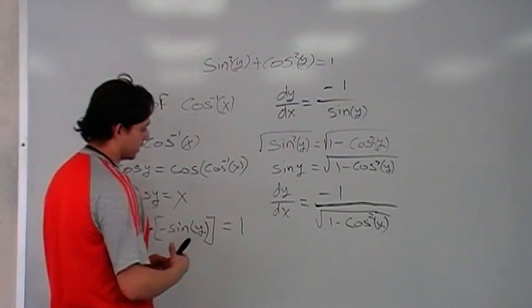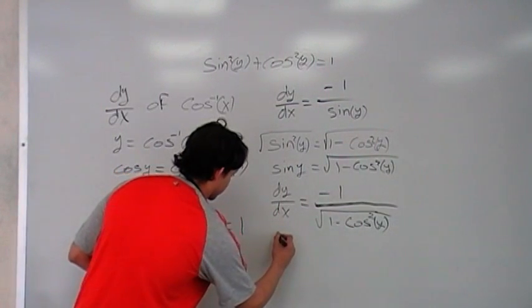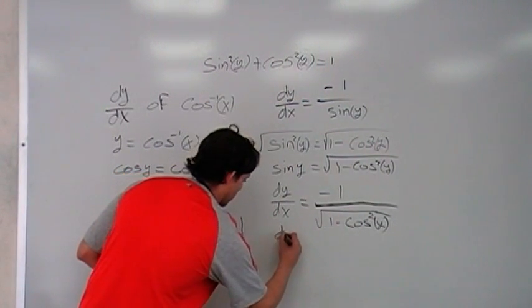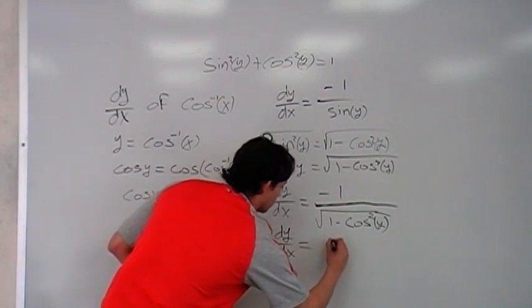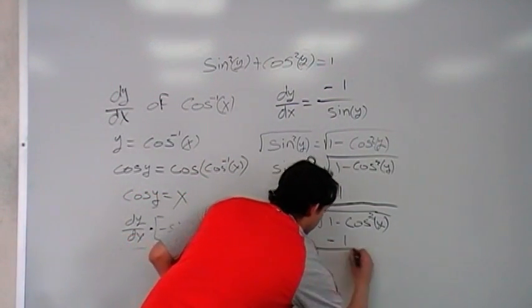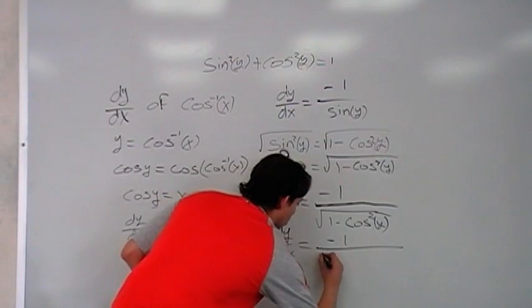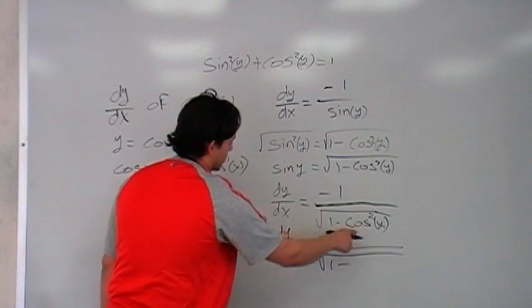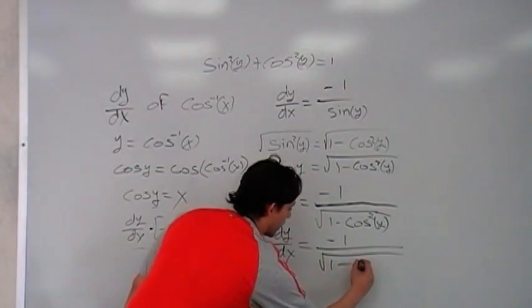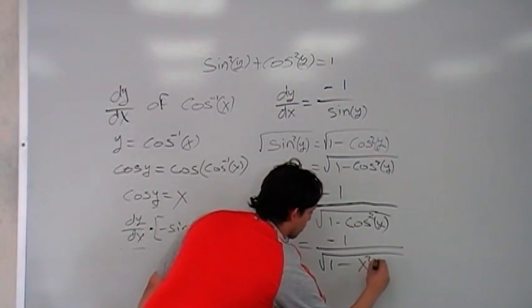So, I'm going to replace everything by x, so we're going to have dy dx is equal to negative 1 divided by the root of 1 minus, and we know cosine is just x, we're going to put x here and we're going to square it.